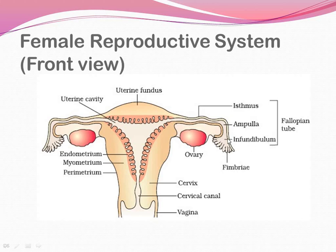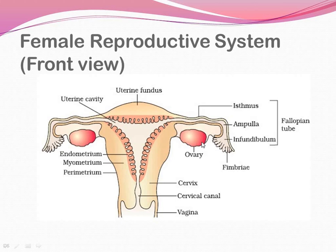The front part of the fallopian tube, the infundibulum, is a wider part - a funnel-like structure. Anteriorly, it is creating finger-like projections called fimbriae. The fimbriae help in collection of the ovum or secondary oocyte from the ovary. Because there is a physical gap between the ovary and the fallopian tube, the fimbriae help collect the secondary oocyte into the infundibulum. The secondary oocyte is the largest cell - in fact, the ovum is the largest cell of the human body.